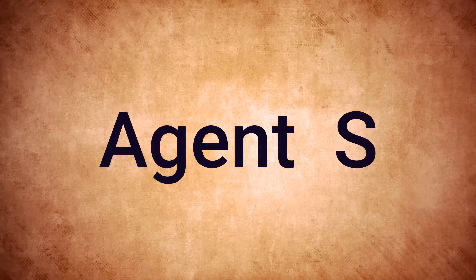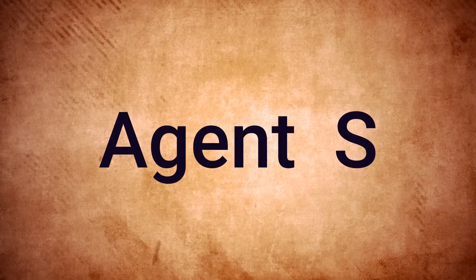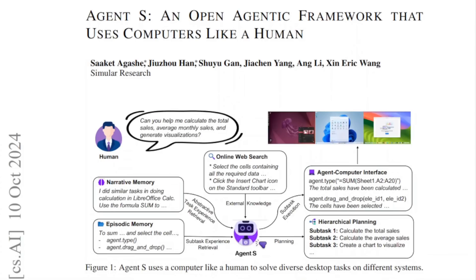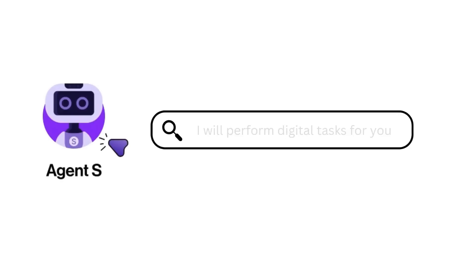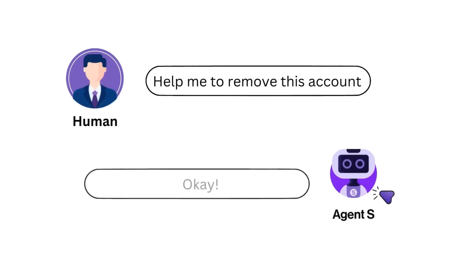What I want to talk to you about today is a really interesting paper called Agent S. The whole idea here is basically getting agents that can interact with your graphical user interface of your desktop and at the same time be able to produce results with those interactions to do useful tasks for you. Basically, you tell the agent a task that you want it to perform and it will do it on your desktop.